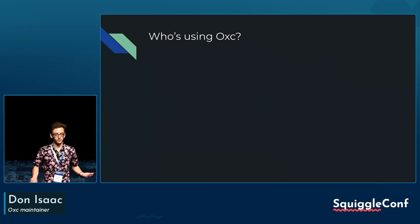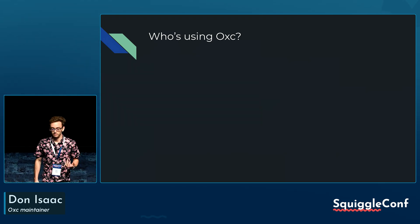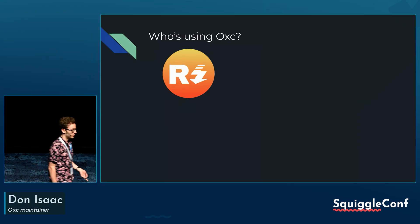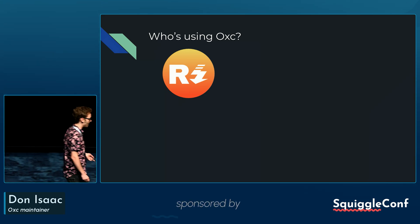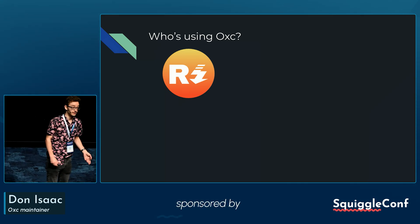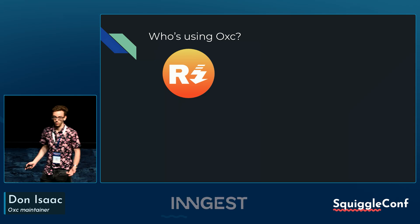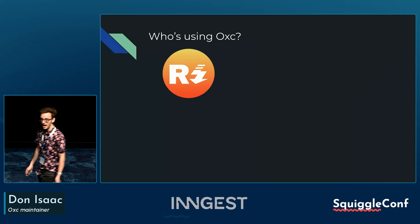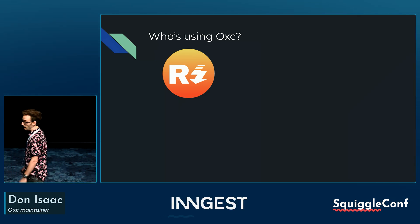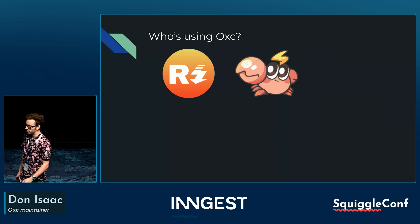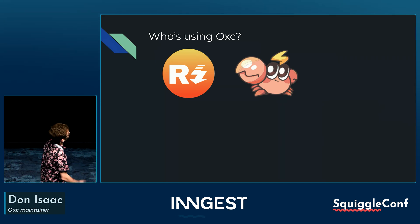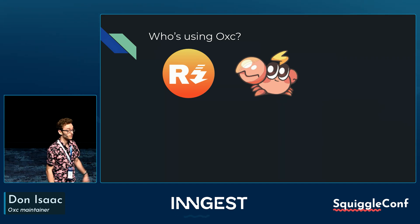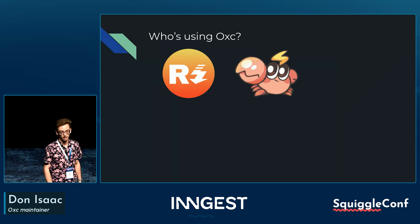So who's using OXC? First is Rolldown. Rolldown is a Rust port of Rollup that is trying to be embedded into Vite, and they use every single one of our tools — if we have it, they're currently using it. A bunch of bundlers besides Rolldown are using our tools, like RSPack, mostly the resolver for module resolution. Also Mako, if you've heard of it.